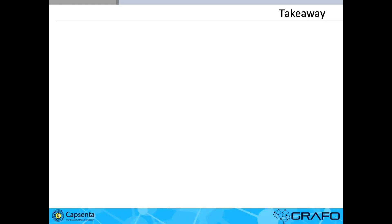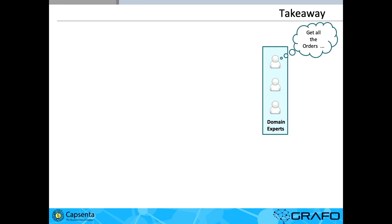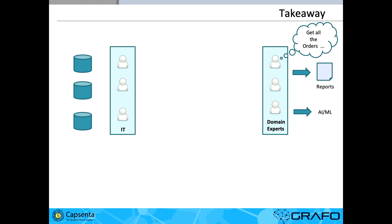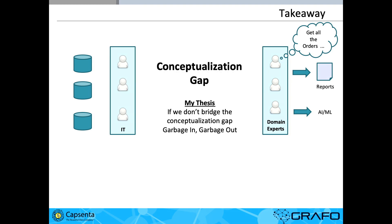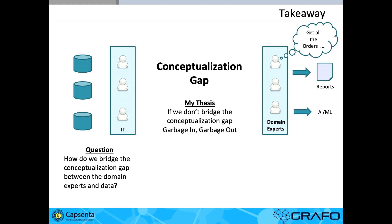In case you have to leave in the next minute, this is what I want you to take away: you've got domain experts who want to be able to ask business questions — generate reports, get data, do AI, machine learning, whatever. But you have all these different data sources, and there's this gigantic conceptualization gap. How do we bridge this conceptualization gap? Because if we don't, it's garbage in and garbage out.